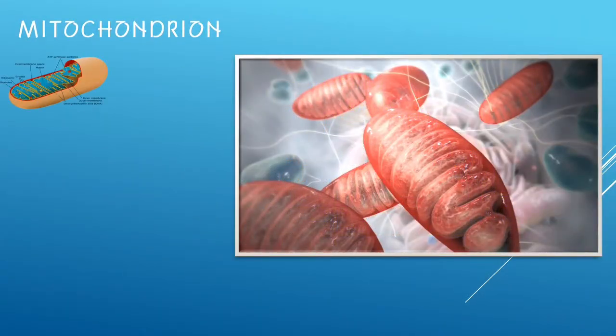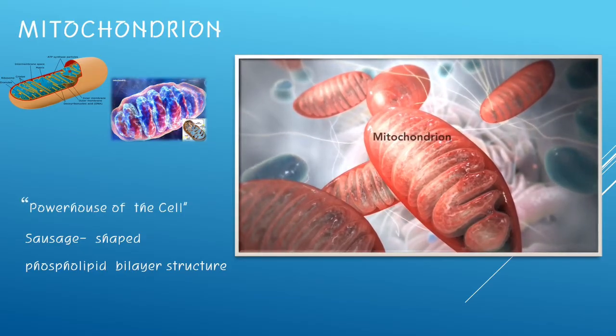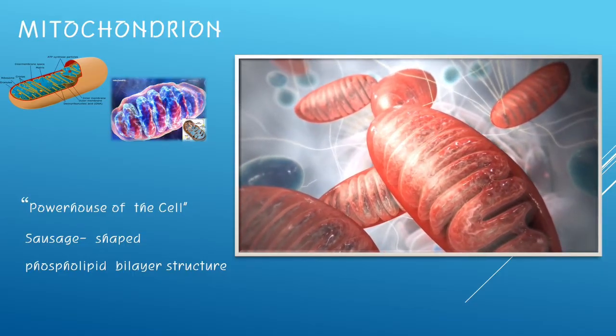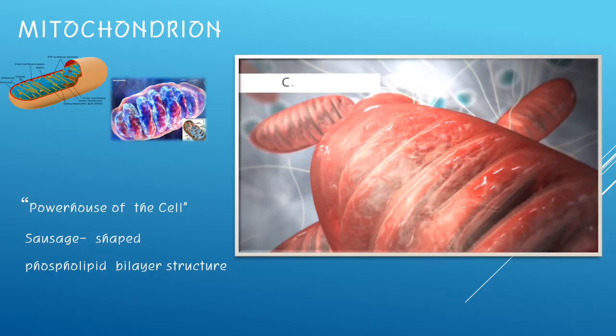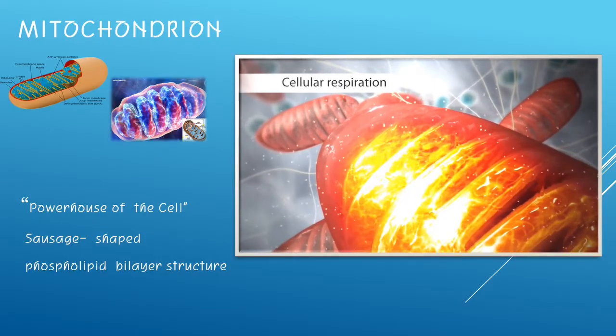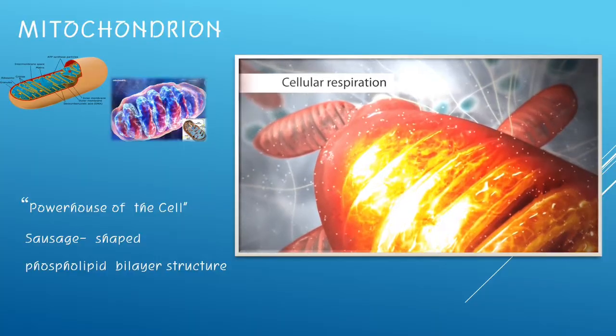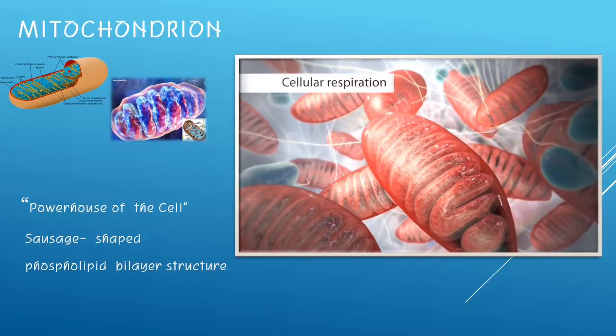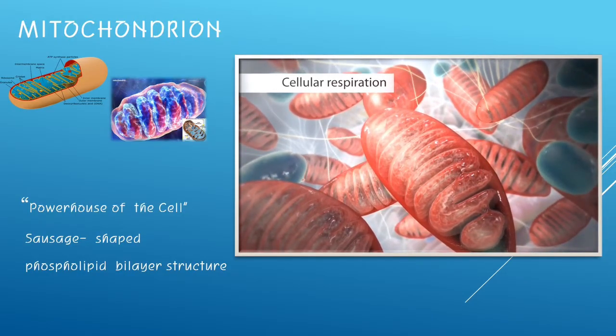Mitochondrion is said to be the powerhouse of the cell, both for plants and animals. It is a sausage-shaped structure which is composed of a phospholipid bilayer. During cellular respiration, mitochondria produce ATP molecules. It provides energy for all cell activities. An individual that demands higher energy will need more mitochondria.